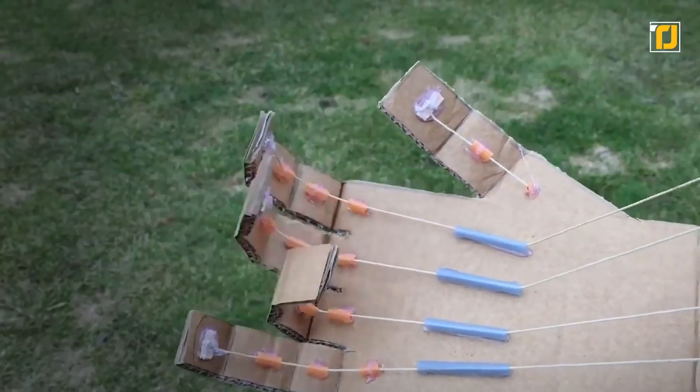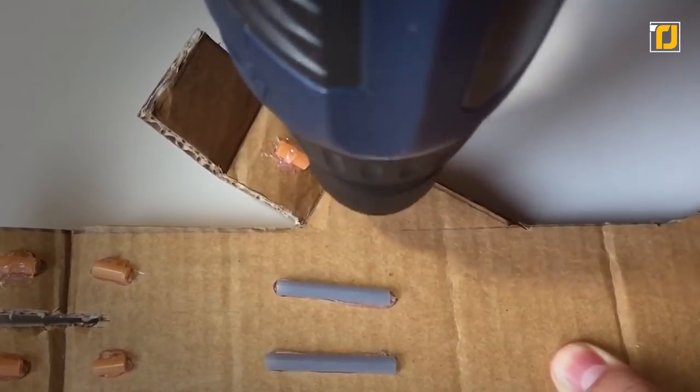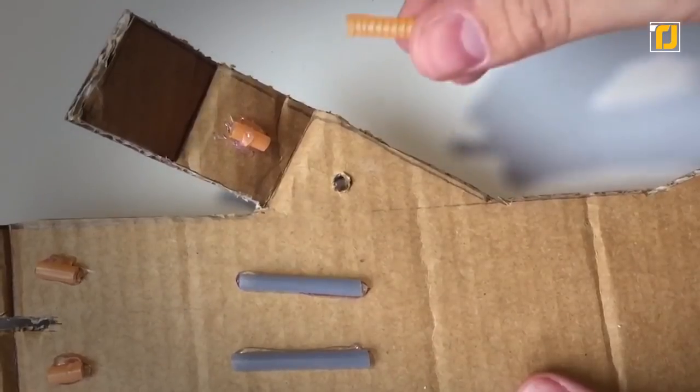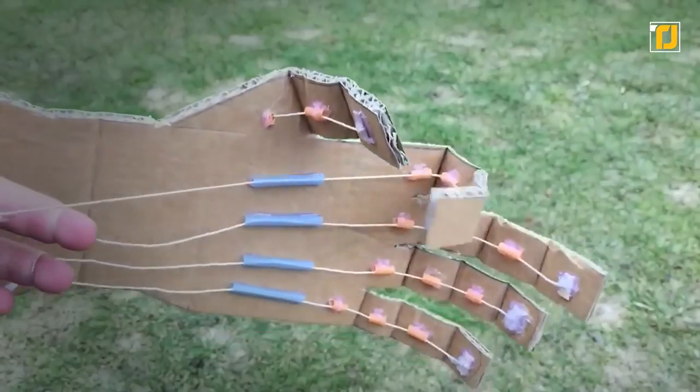All you need is some sturdy cardboard, plastic straws, some thread, and your trusty hot glue gun. The results are astounding and we really think this cardboard robot arm could really become a hit.